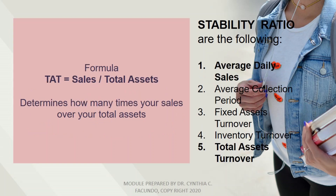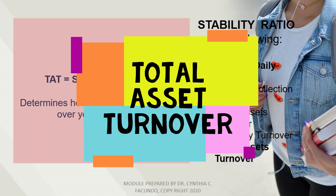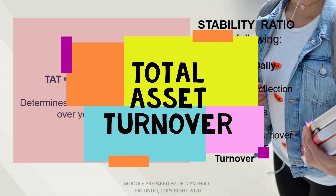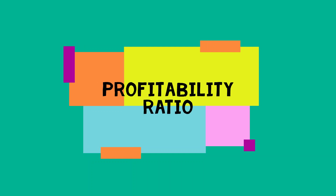The last part of stability ratio is the total asset turnover. The formula is: total asset turnover equals sales divided by total assets. It determines how many times your sales exceed your total assets.